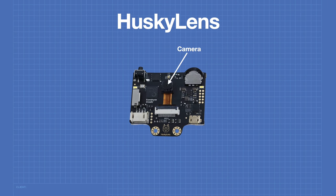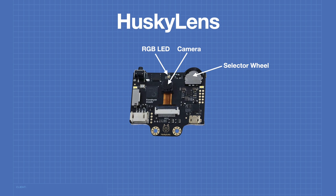In the center of the Husky Lens we can see the camera, either the 2 or 5 megapixel device depending on which model you've purchased. Above the camera is an RGB LED used to indicate status during training mode, and useful when using it in selfie mode for face recognition. The selector wheel navigates through menus and can be pushed down to make a selection. The training button is depressed when you want to train the Husky Lens to learn an object.